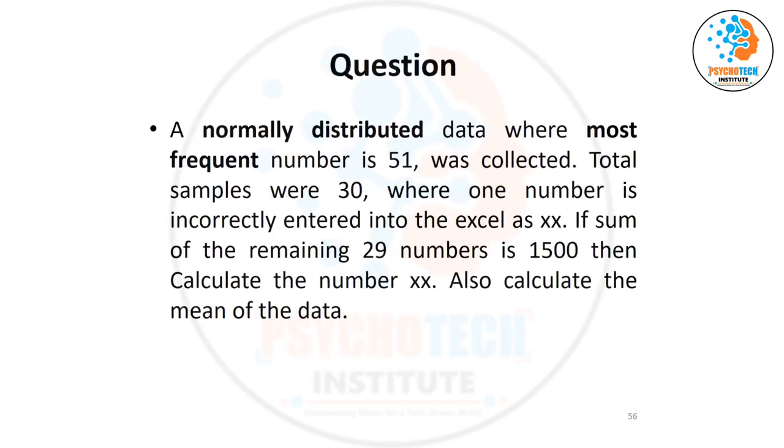Okay, there is a question also. So let's take a look: a normally distributed data where most frequent number is 51 was collected. Total samples were 30 where one number is incorrectly entered into the Excel sheet as xx. If the sum of the remaining 29 numbers is 1500, then calculate the number xx. Can you solve this?